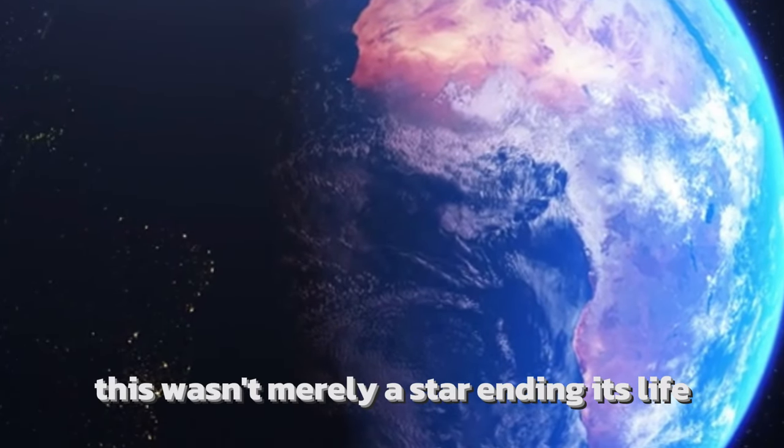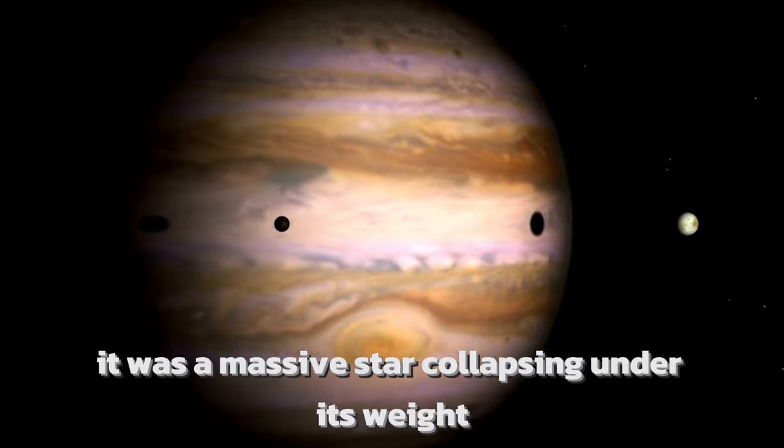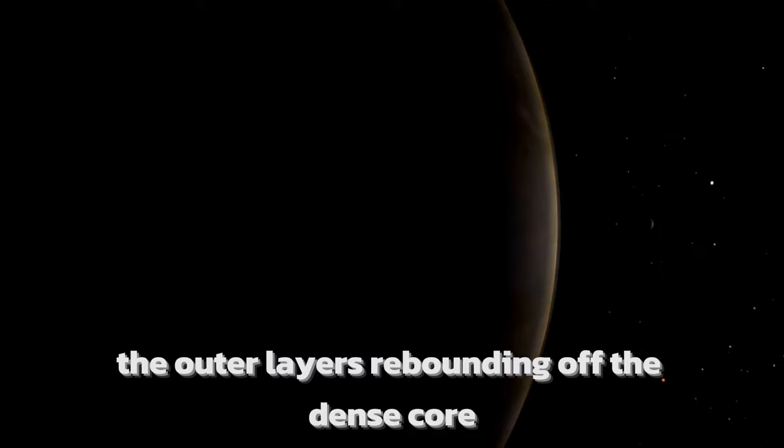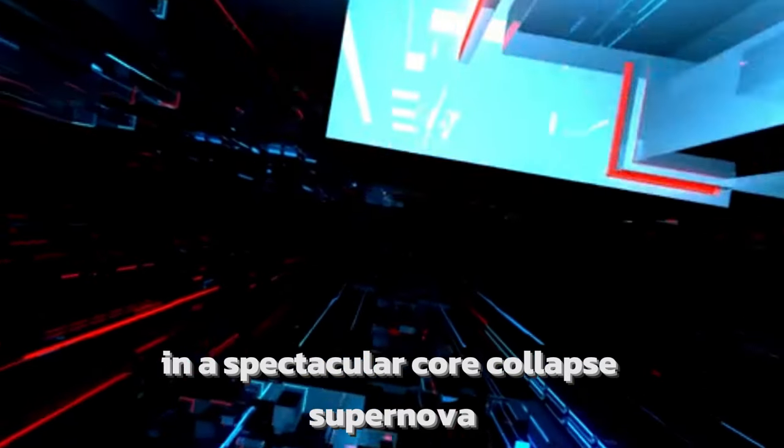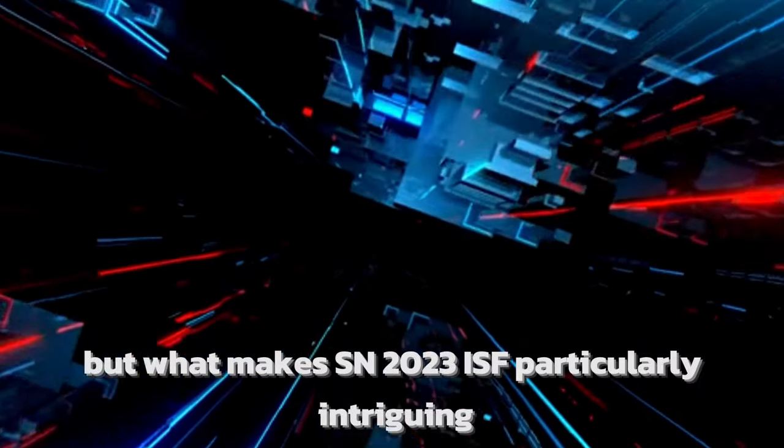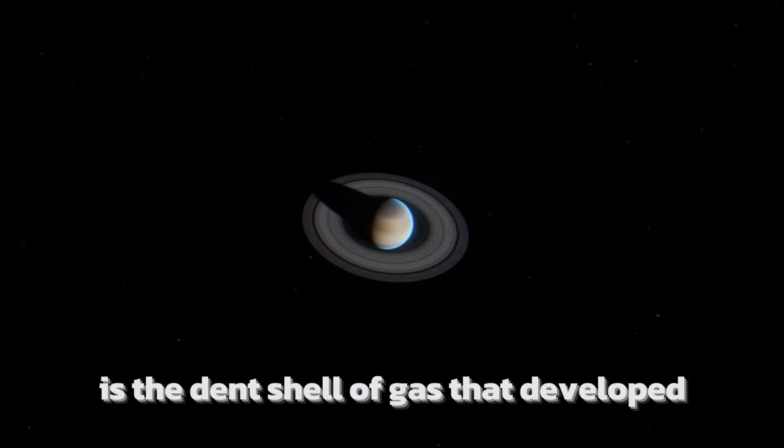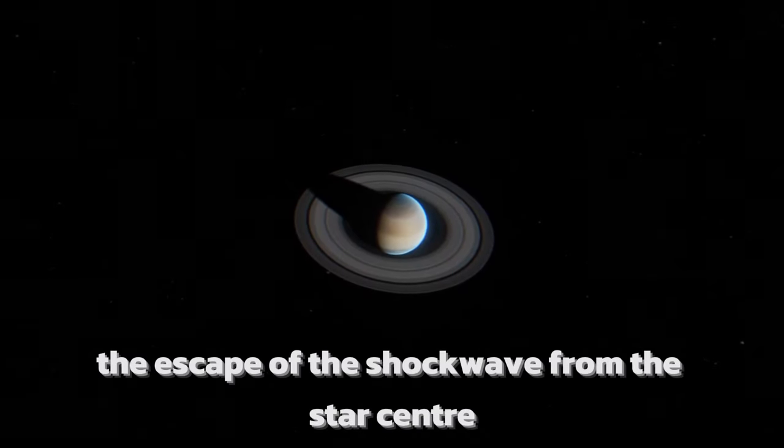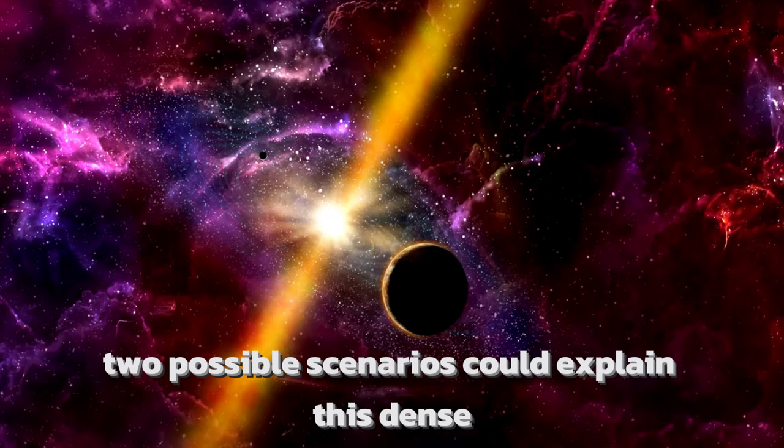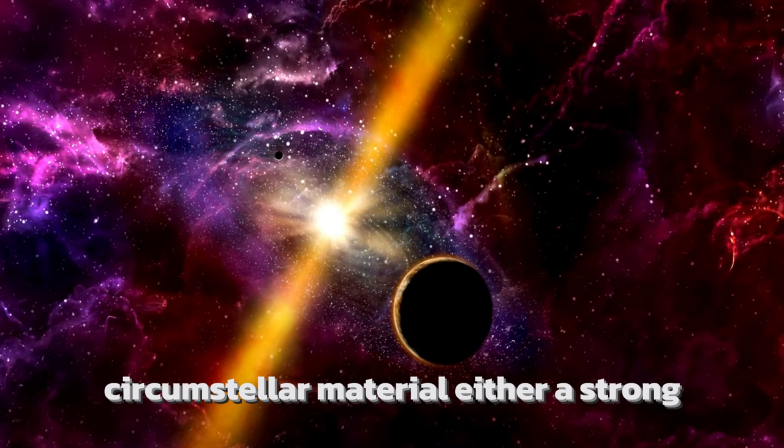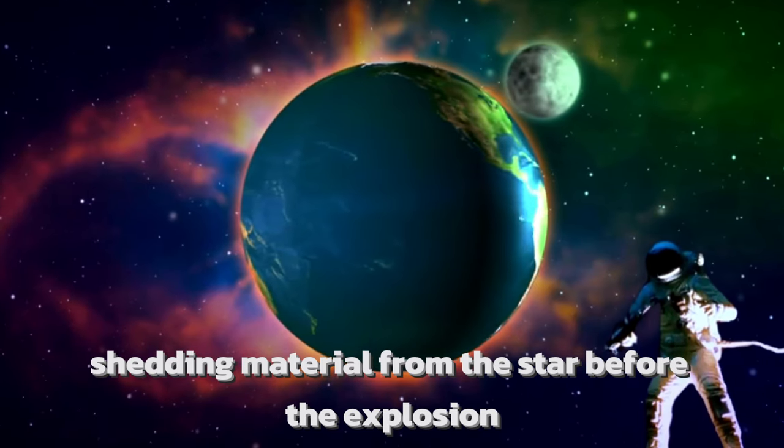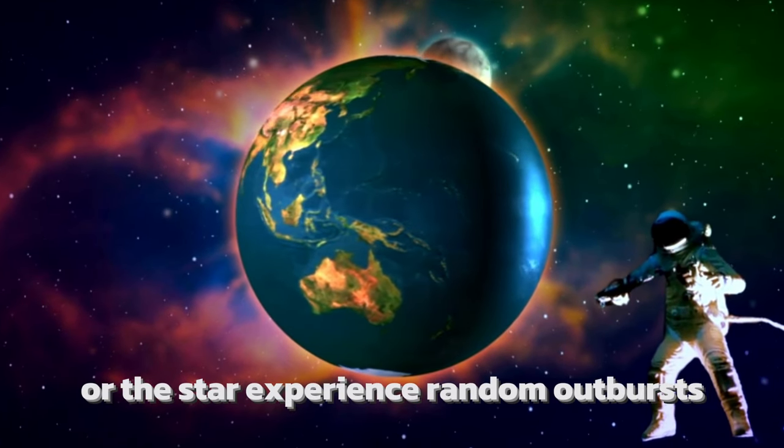This wasn't merely a star ending its life, it was a massive star collapsing under its weight as its nuclear fuel was exhausted, the outer layers rebounding off the dense core in a spectacular core-collapse supernova. But what makes SN 2023 ISF particularly intriguing is the dense shell of gas that developed, significantly impacting the escape of the shockwave from the star's center. Two possible scenarios could explain this dense circumstellar material: either a strong, steady wind had been shedding material from the star before the explosion, or the star experienced random outbursts, hurling material into space.